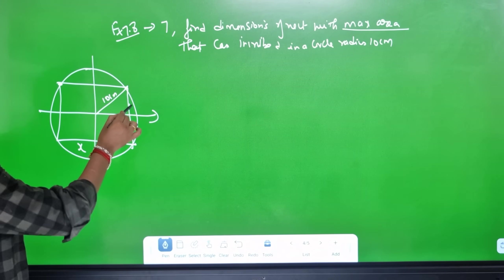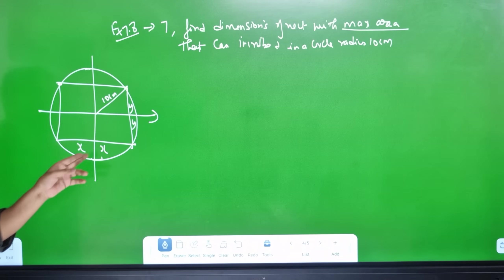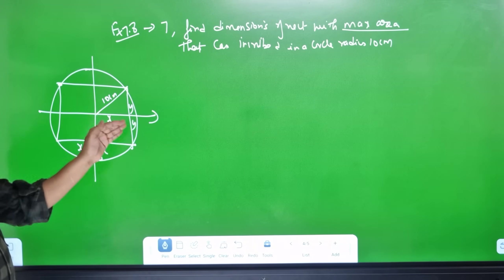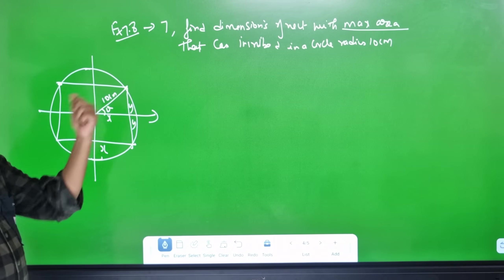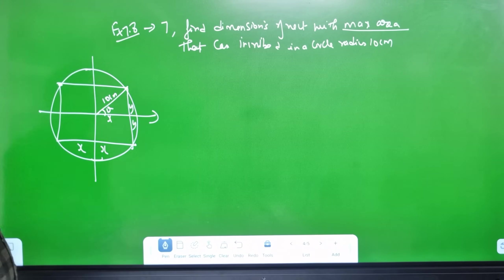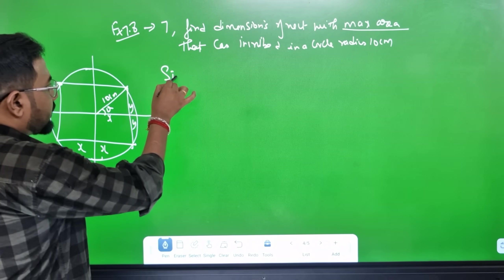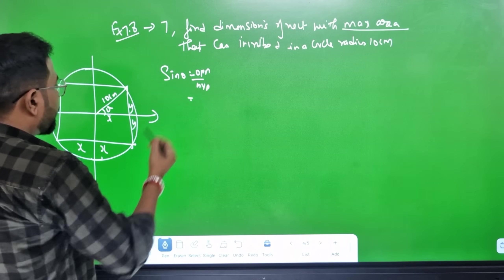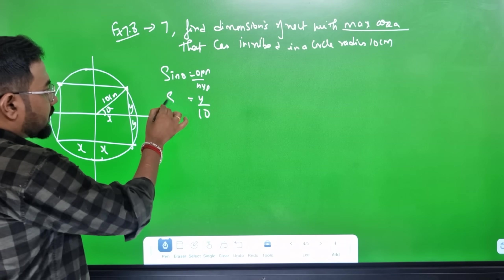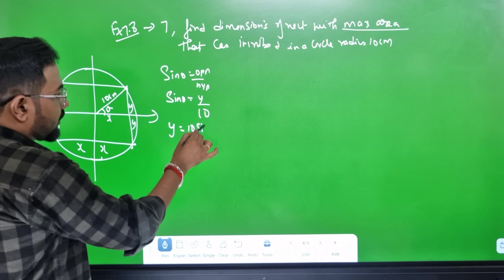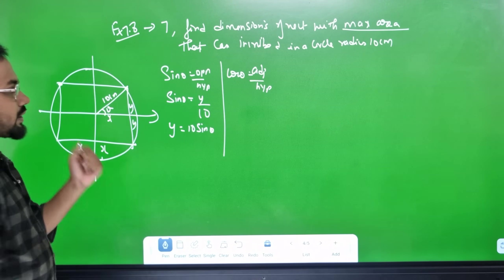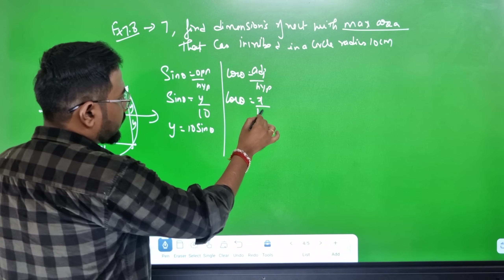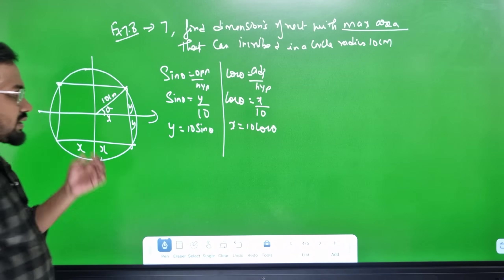Using trigonometry with angle θ: sinθ = opposite/hypotenuse = y/10, so y = 10sinθ. And cosθ = adjacent/hypotenuse = x/10, so x = 10cosθ.